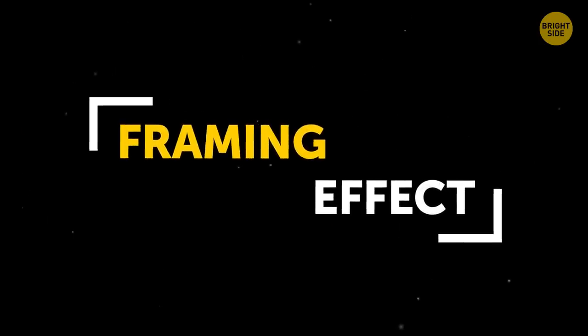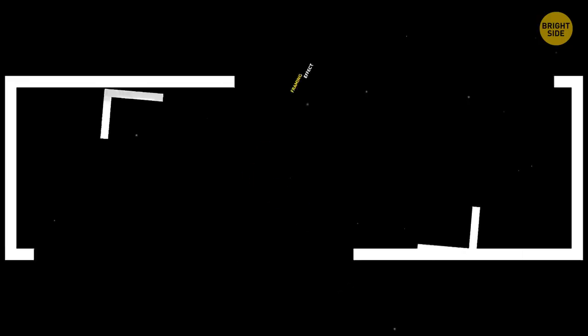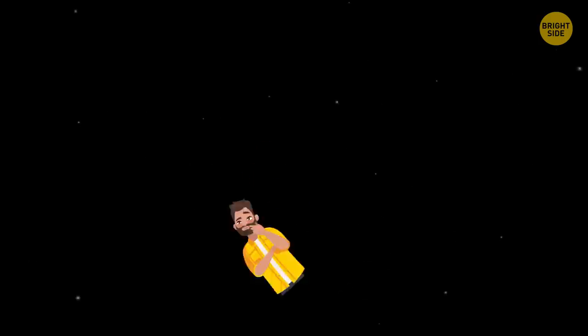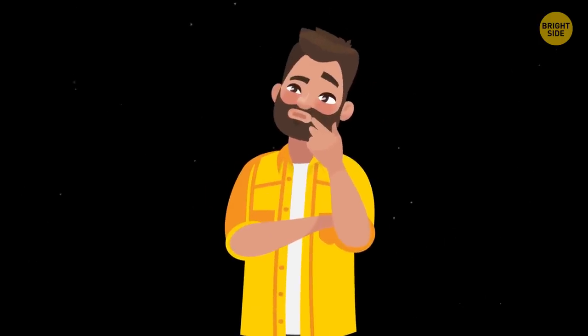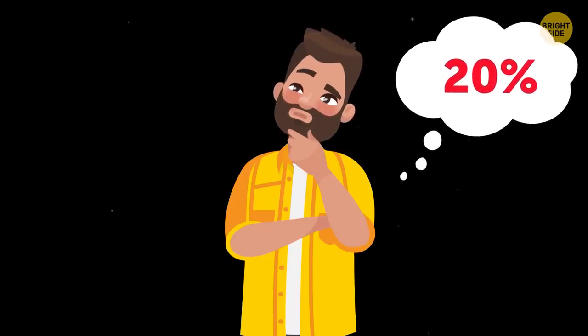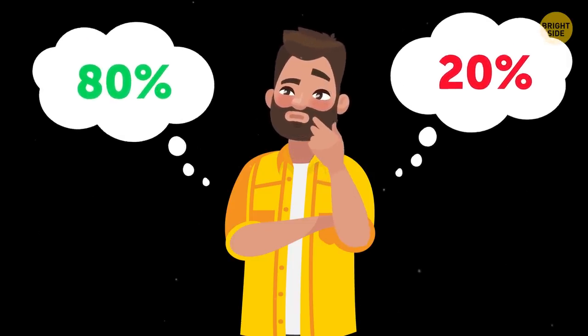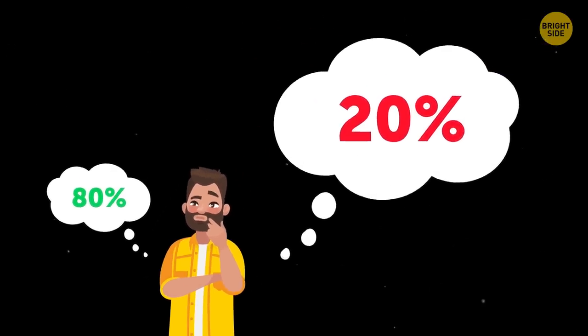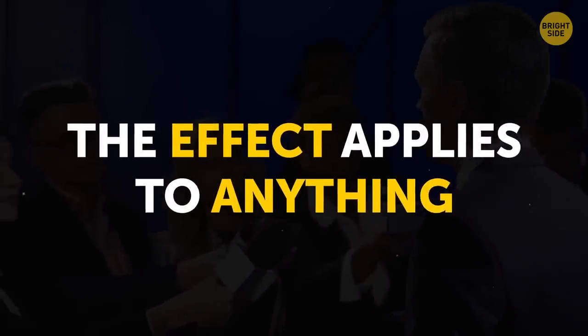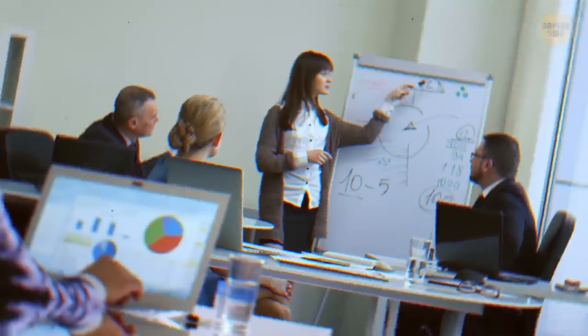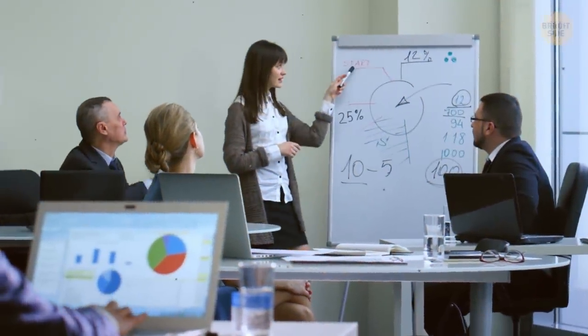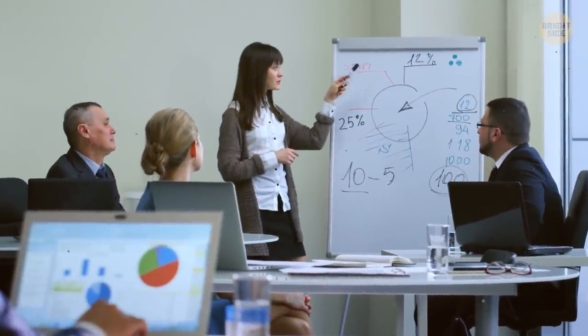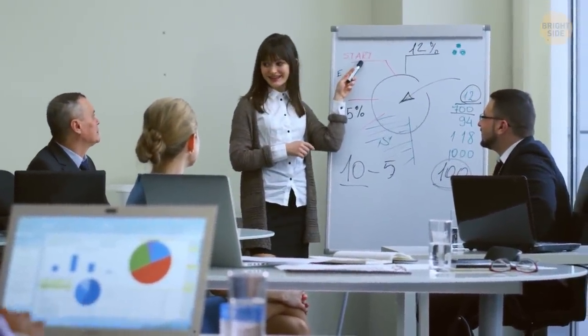This is what the framing effect is about. We tend to prefer an option that is described in a positive way. Even if the only other option is absolutely the same, people will likely disregard it because it's been given a negative description. Remember the 20% chance of failure? That's it. And the effect actually applies to anything. Politicians and marketing specialists alike use it a lot in their campaigns. So pay attention to the deeper sense, not the words that frame it.